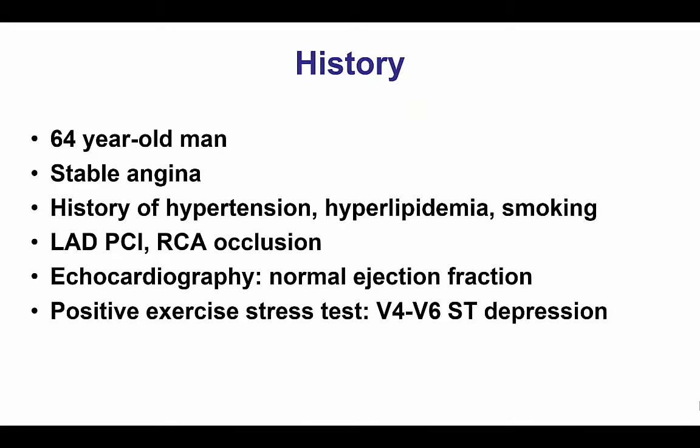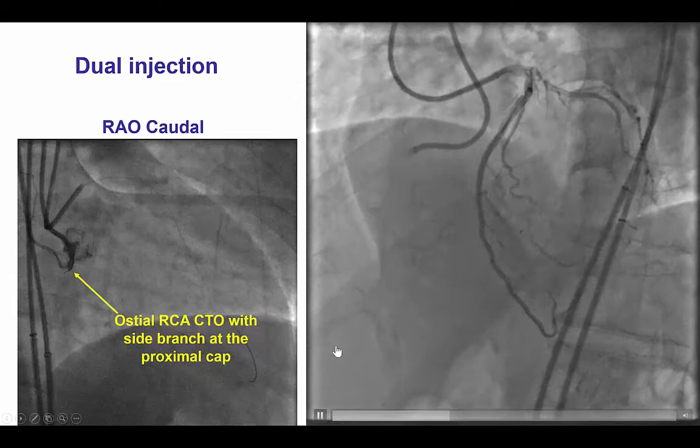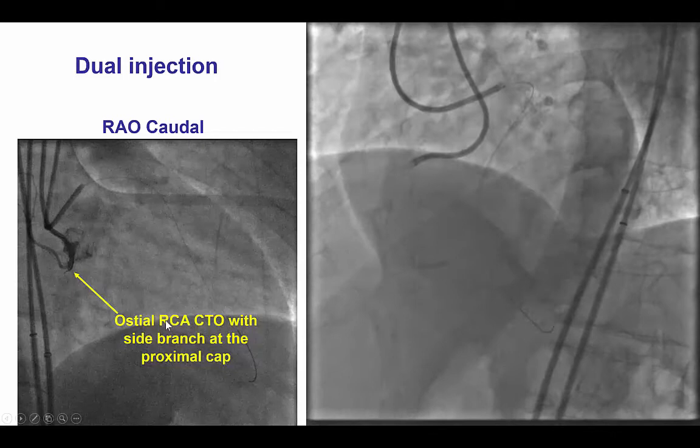This was a patient that was 64 years old with stable angina, presented with right coronary artery occlusion. He had normal ejection fraction and a positive stress test. His diagnostic angiogram demonstrated a proximal occlusion of the right coronary artery with filling of the PDA via collaterals from the LAD.